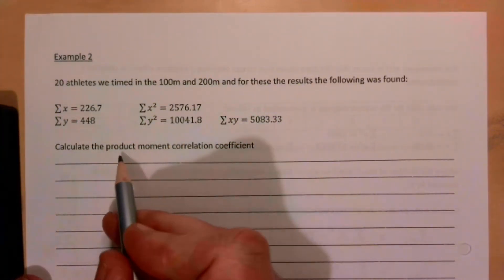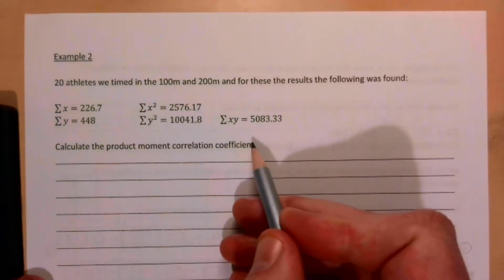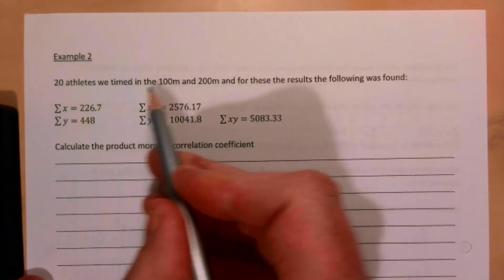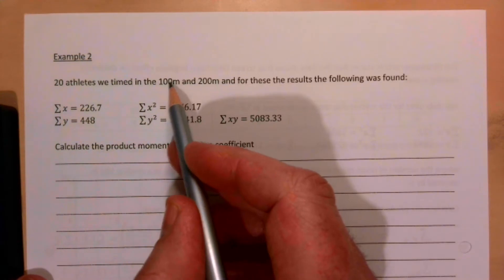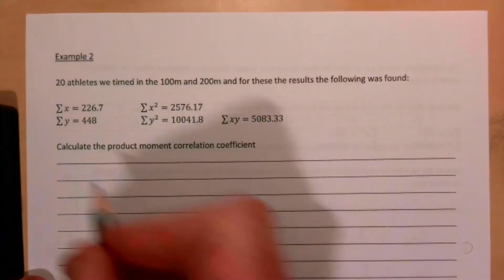Calculate the product moment correlation coefficient. We're trying to find if there's a correlation between people who run fast in the 100 and also run fast in the 200.